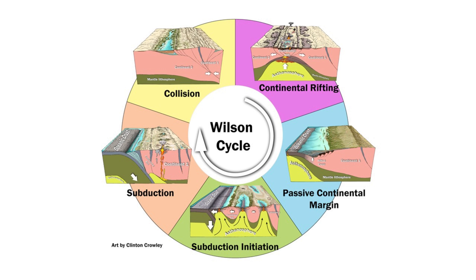These five stages of the Wilson Cycle highlight the dynamic nature of Earth's surface, driven by plate tectonics and the continuous opening and closing of ocean basins. Over geological time, this process contributes to the recycling of the Earth's crust and the constant reshaping of continents and oceans. Thanks for listening!